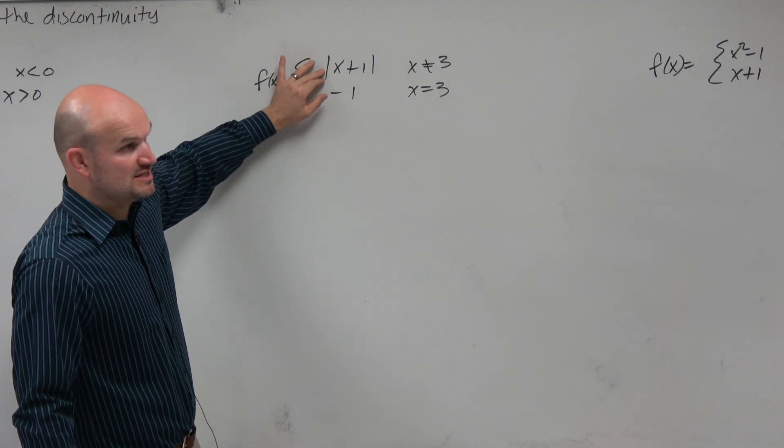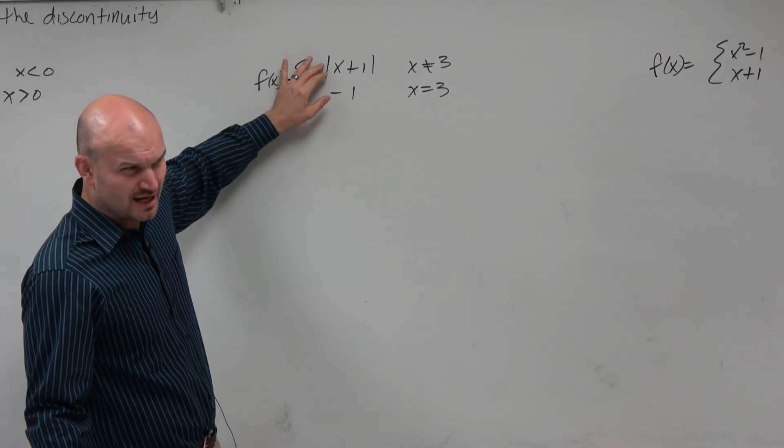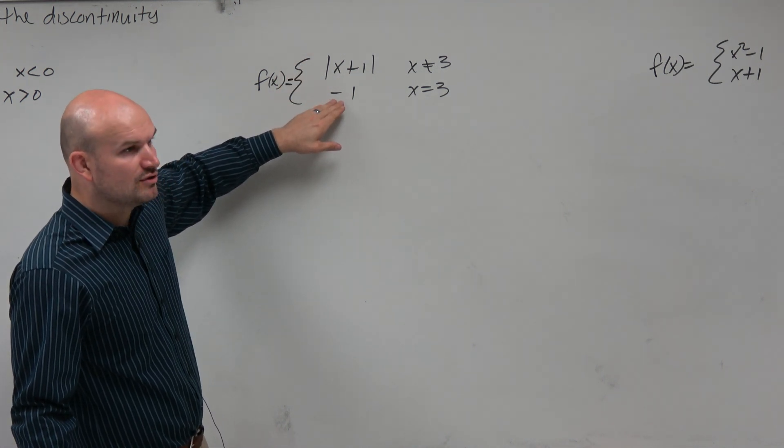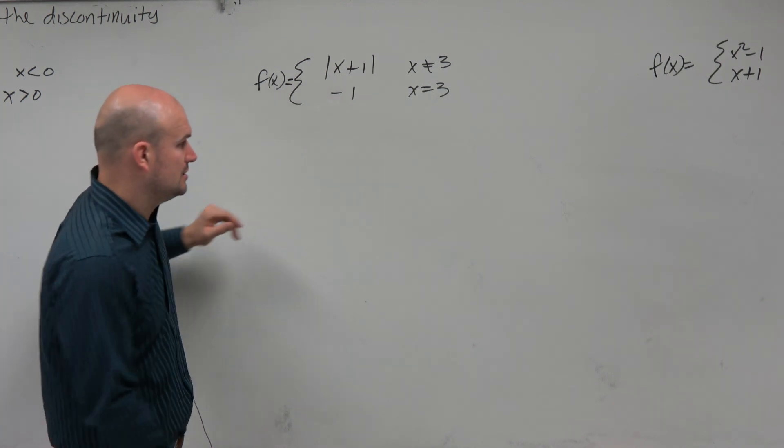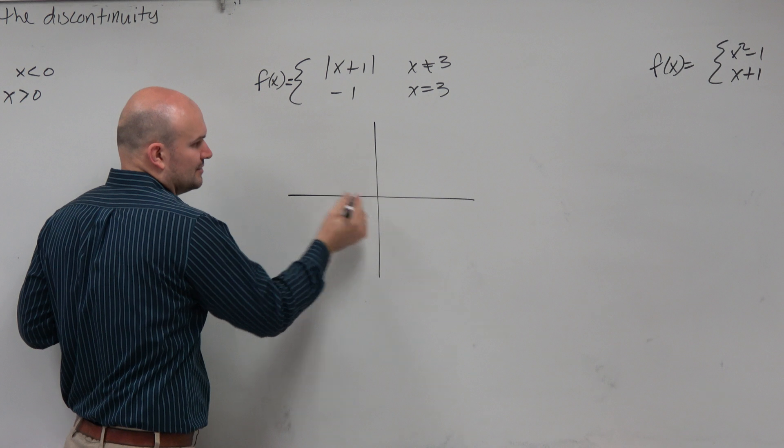So we have the absolute value of x plus 1, which we can graph in our graphing calculator, but we should be able to graph this very easily on our own. And we can graph y equals negative 1. We could also do this in our calculator, but I think I can do this rather quickly.